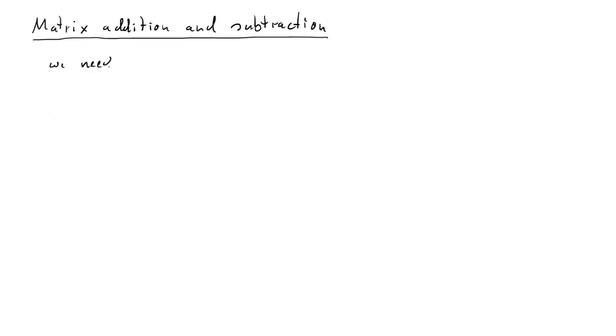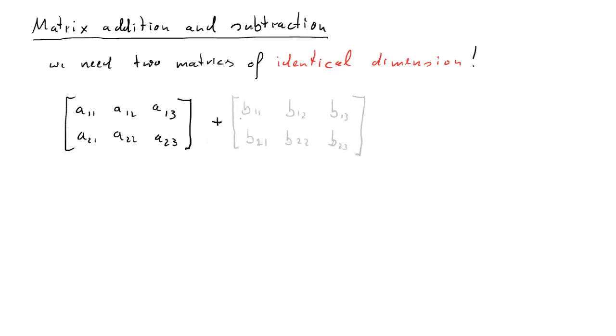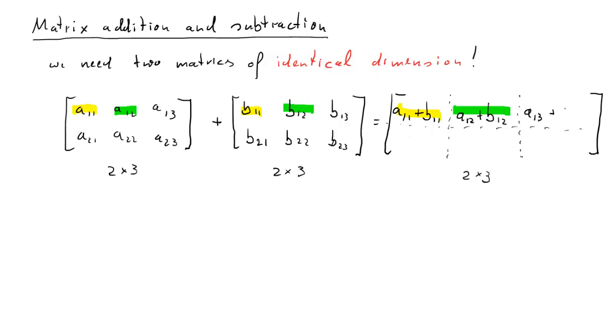Next we talk about matrix addition and subtraction. What we need for matrix addition and subtraction is two matrices of identical dimensions. That's extremely important. We need to have the same number of rows and columns. So let's say we start out with this matrix A, and I'll again use the generic notation. Then we have a second matrix B of exactly the same dimension which we want to add. Both of these are 2 by 3 matrices. Then the result of an addition is going to be 2 by 3 again. The 1,1 element will be the sum of the two 1,1 elements. The 1,2 element will be the sum of the 1,2 elements of both matrices and so forth. This is how we calculate the values for the individual elements of that 2 by 3 matrix.